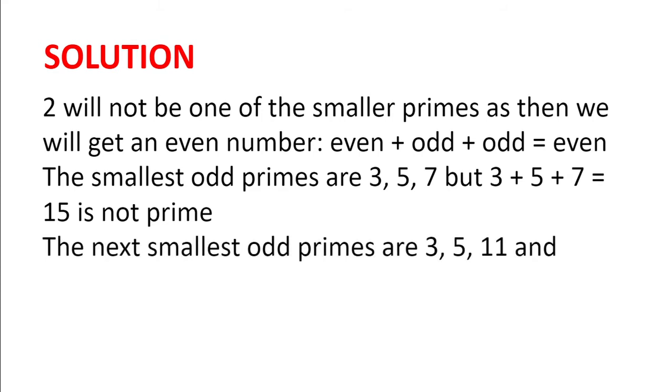So we look at the next smallest odd primes, which are 3, 5 and 11, and 3 plus 5 plus 11 makes 19, which is prime, so that's our answer.